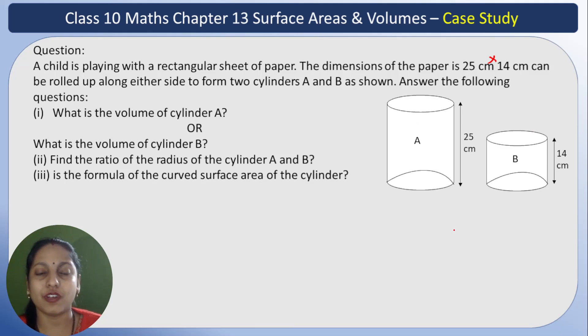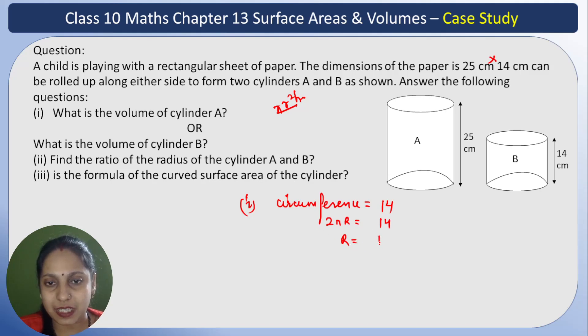What is the volume of cylinder A? If you look at the volume formula, it's π R² H. H I have - both cylinders are given as 25 and 14 - but R I don't have. How can I find R? Its height is 25, so the circumference is 14. I can find the circumference first. Circumference = 14, and its formula is 2πR. From here I can find R, which is 14 upon 2π, which is 7 upon π.